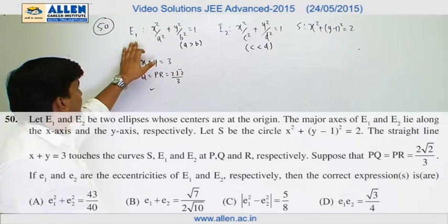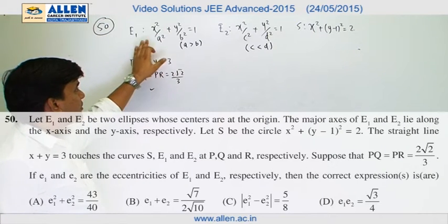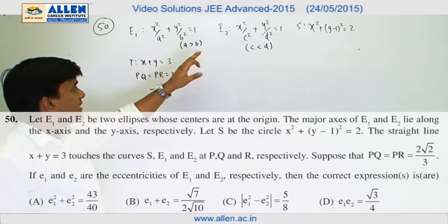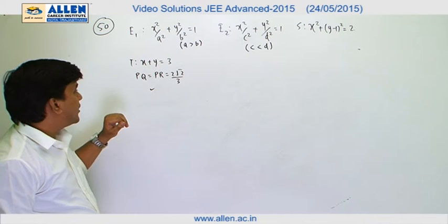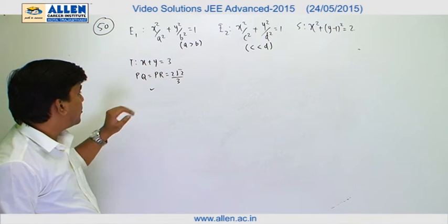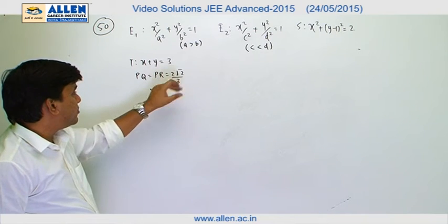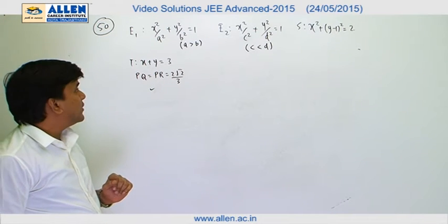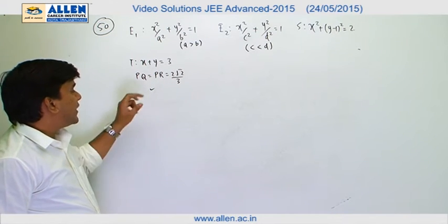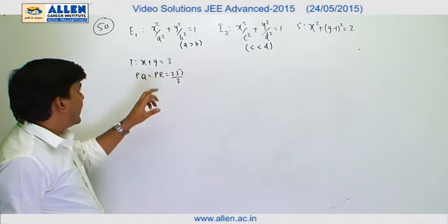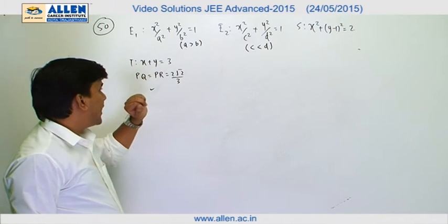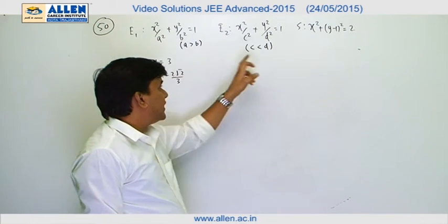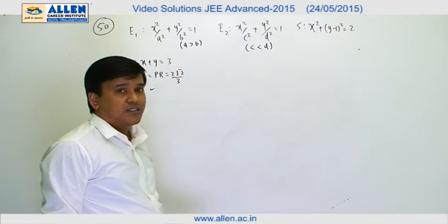In question number 50, we have been given ellipses e1 and e2, and a circle s. A line is tangent to all three curves at points P, Q, and R respectively, with PQ equals PR equals root 2 upon 3. First, we are finding out the coordinates of point P — that is, we need to calculate the point of contact of this tangent with this circle.